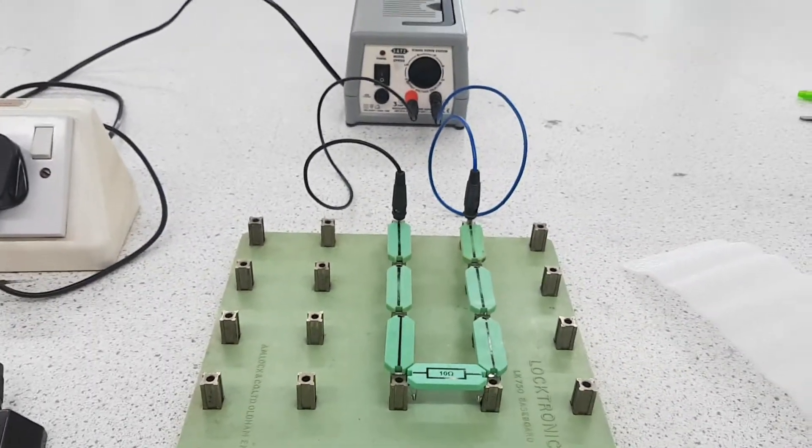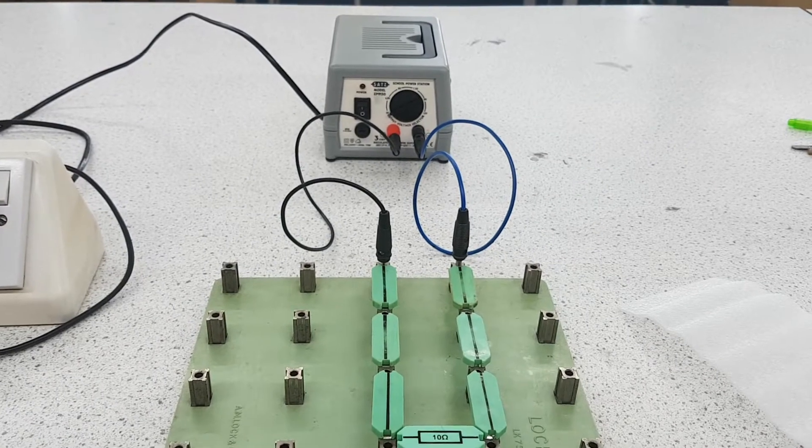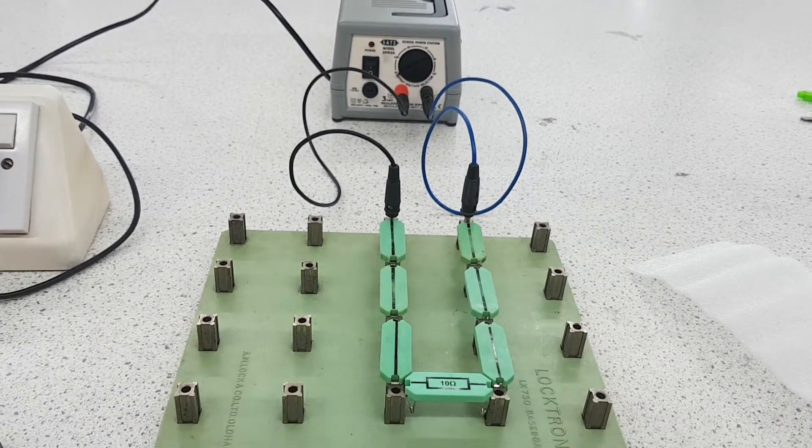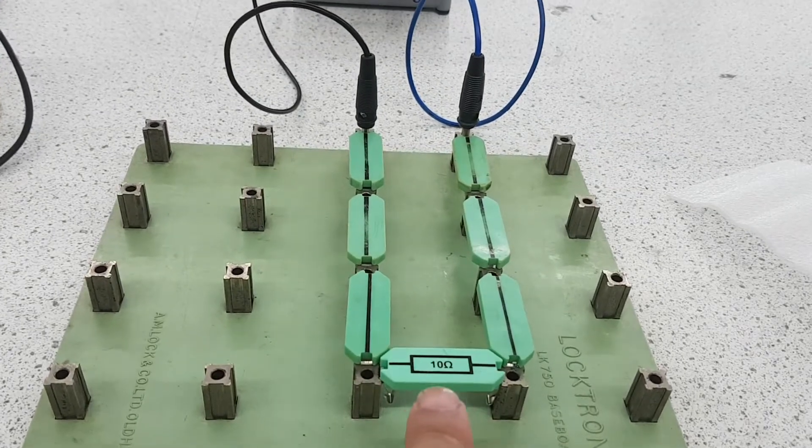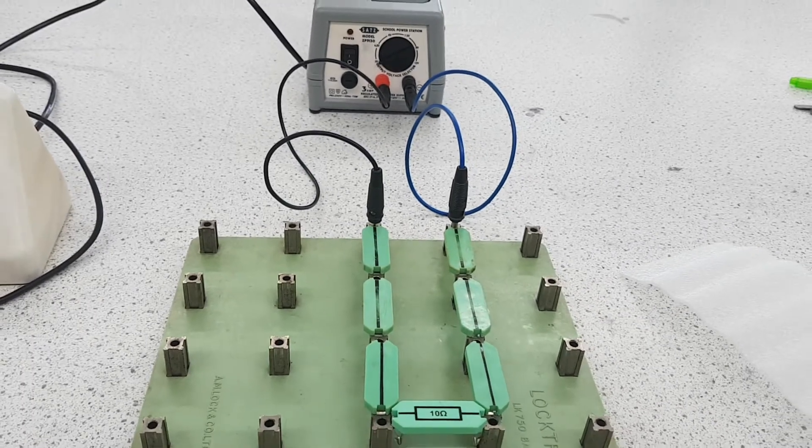This experiment is to do with working out the voltage current pattern for different components. This component happens to be a fixed resistor, so it's a 10 ohm resistor, so I'm going to show you.